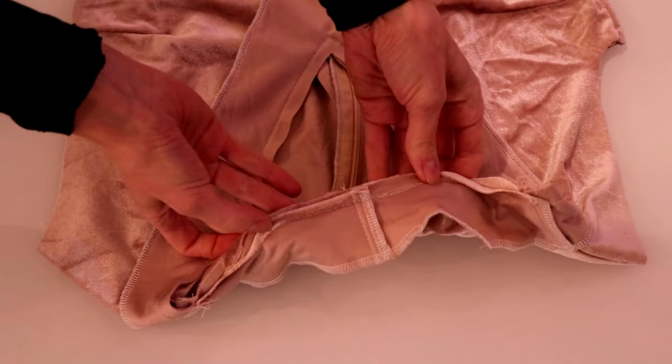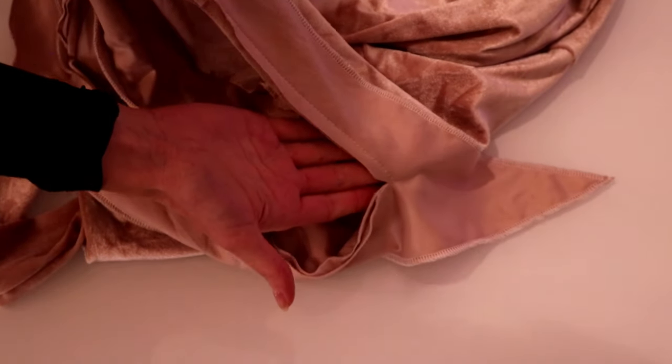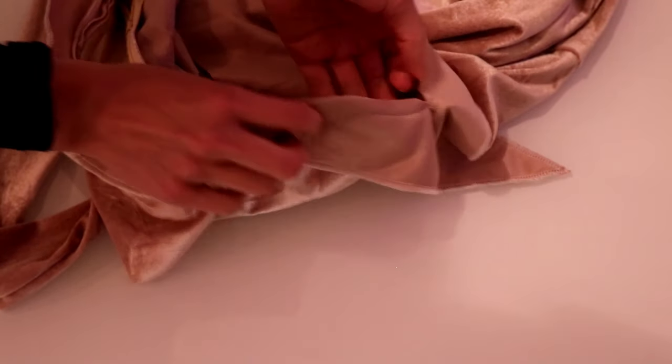Trim the seam down to about one fourth of an inch or six millimeters to reduce any bulk in the neckline or serge the neckline. Clip into the v-neckline. Clip close to the seam line but not through it.